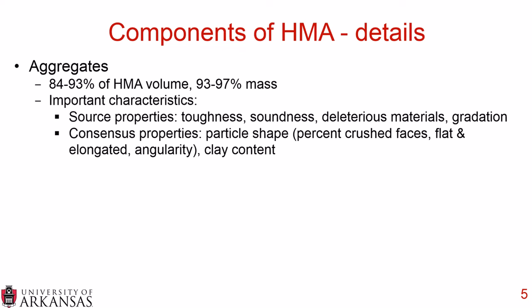Some important characteristics of aggregates can be divided into source properties and consensus properties. Source properties include toughness, soundness, deleterious materials, and gradation. Consensus properties include particle shape — which can indicate percent crushed faces, flat and elongated particles, and angularity — and also clay content.